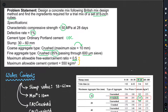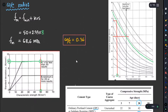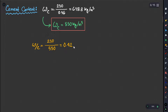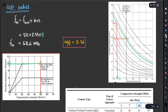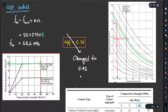The maximum allowable water-cement ratio is 0.5. Our revised water-cement ratio of 0.42 is less than 0.5, so this is acceptable. Therefore, the adopted water-cement ratio is 0.42.